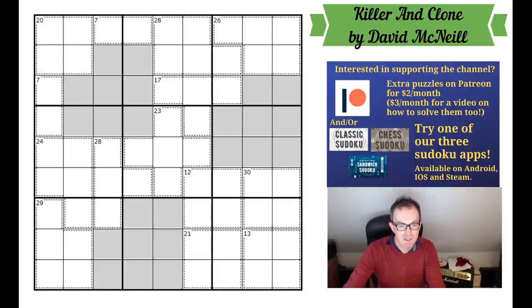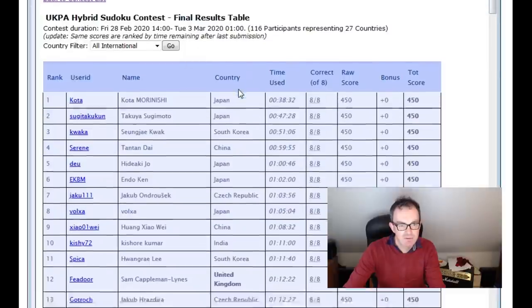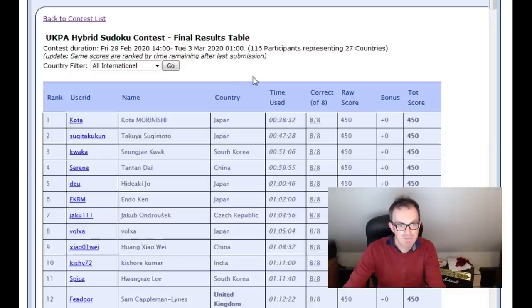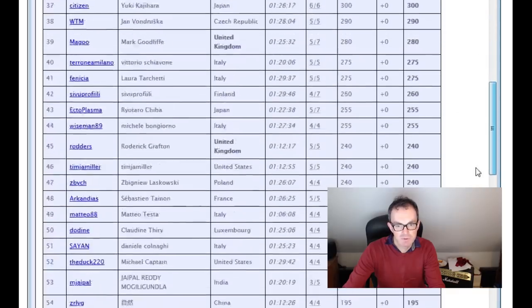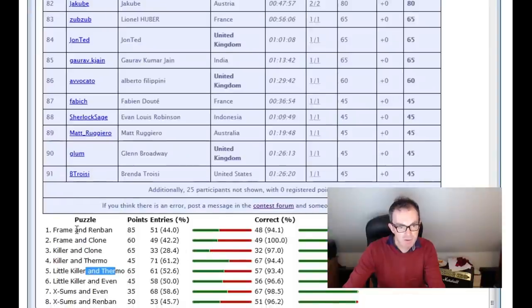Now I want to talk about this test because I was looking at the results. The test was due to last 90 minutes and you can see Kotomoran Ishii, the three-time world Sudoku champion, finished the entire set in 38 minutes. So that is absolutely extraordinary. He's almost 10 minutes quicker than the next fastest. This is an unbelievable performance from Kota on this exam. But what I also wanted to show you is we can see each of the puzzles and you can see how many points were allocated to them and how many people entered answers for them.